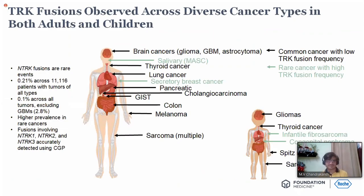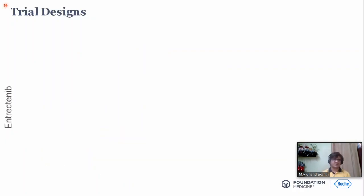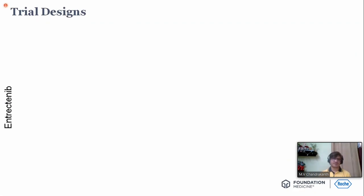Regarding NTRK: even though the total number is small, NTRK fusion can be present practically in any organ, whether pediatric or adult. NTRK fusions can occur in any cancer but are rare. If you give a TRK inhibitor like larotrectinib or entrectinib, the responses are highly productive and dramatic.